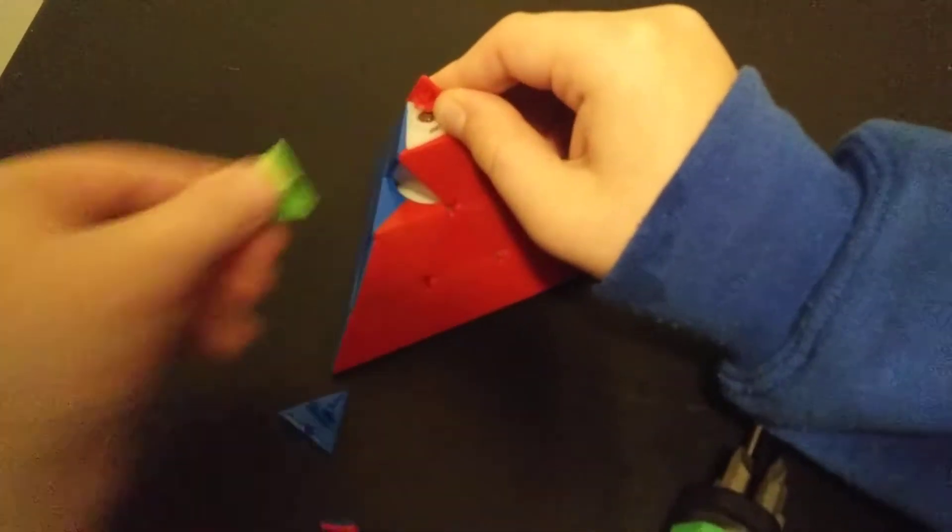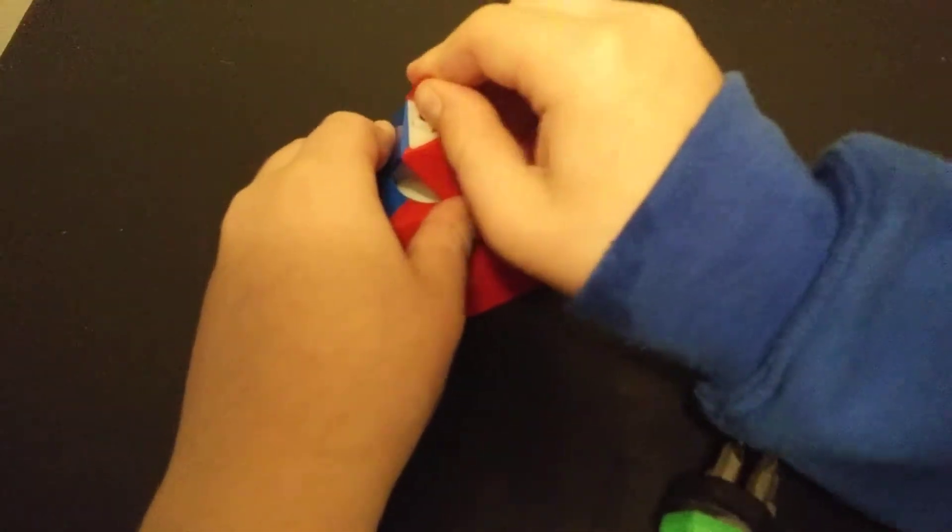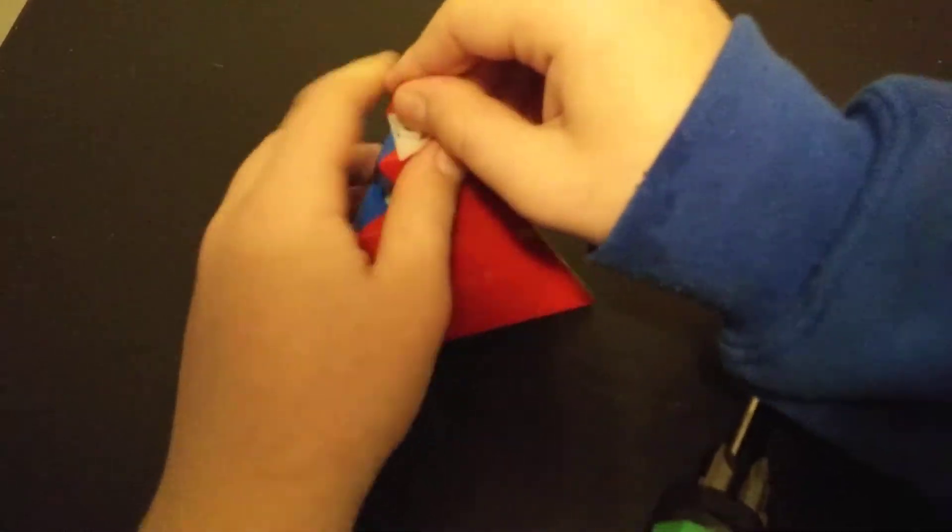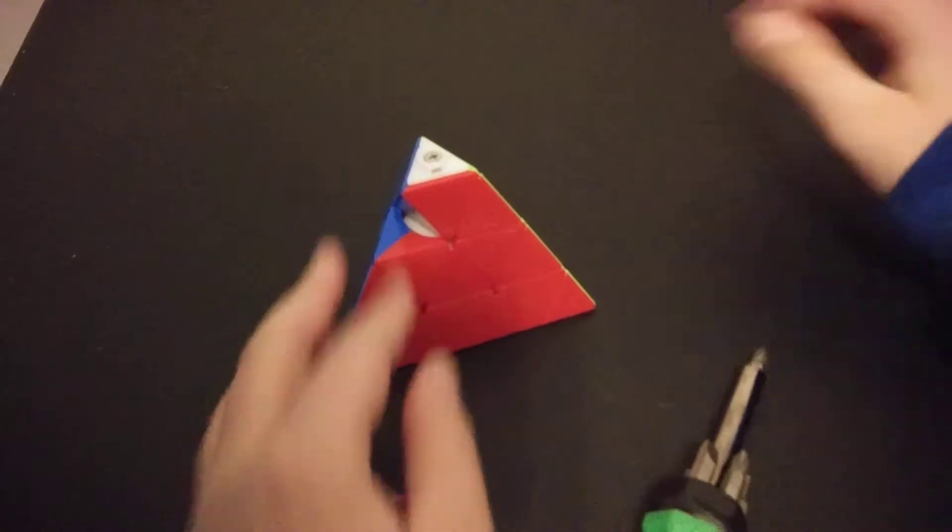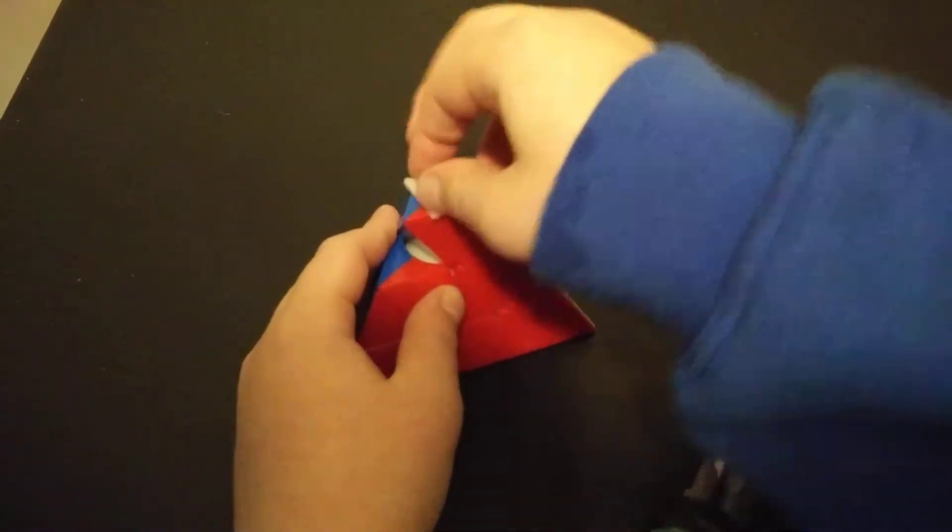And then what we can do is just pull apart this tip piece off and then this. Now we have three tip pieces and we'll put those to the side. And then we have this kind of naked tip.